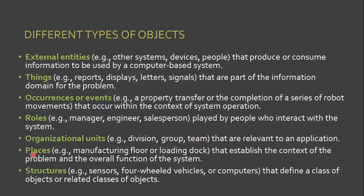Next are places — which establish the context of the problem and the overall function of the system — for example, a manufacturing floor or loading dock. And the last type of object is structures, which define a class of objects or related classes of objects. Good examples include sensors, four-wheeled vehicles, or computers.